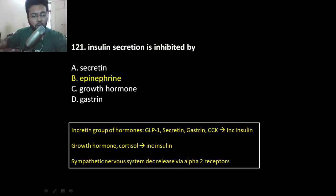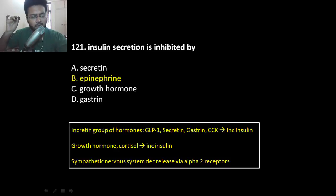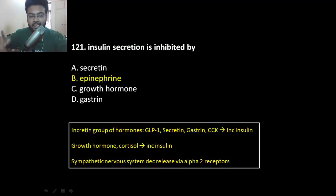Insulin secretion is inhibited by, look, whenever you eat food, it goes to your stomach and that food increases the release of incretin group of hormone. This incretin group of hormone increases the release of insulin to decrease the blood glucose level.